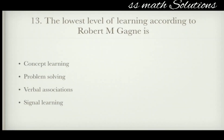The lowest level of learning according to Robert M. Gagné is — concept learning, problem solving, verbal association, or signal learning? The lowest level of learning according to Gagné is signal learning. Option 4, signal learning, is the answer.